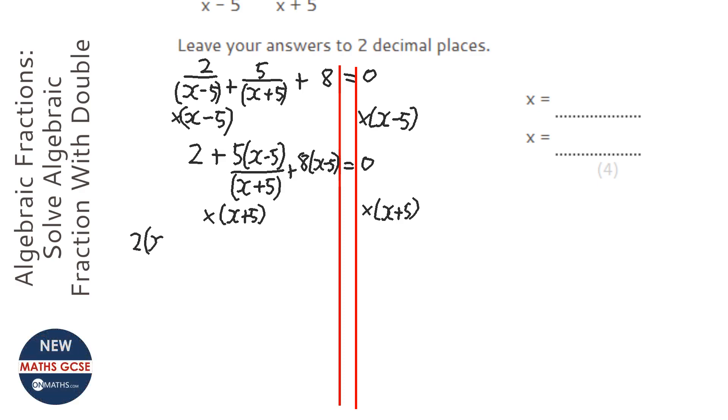I'm going to move to the left a little bit because I think I'll need more space. So (x plus 5), this doesn't do anything, it just gets rid of the fraction, doesn't do anything to the top. And then we've got this 8, which is already times by (x minus 5), but it's now times by (x plus 5) as well. I'm glad I left a little bit of extra room.